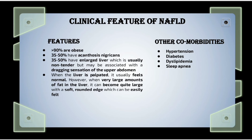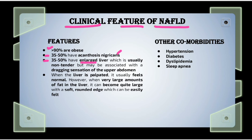Regarding clinical features of NAFLD: about 90% of NAFLD patients are obese. About 35 to 50% of NAFLD cases have acanthosis nigricans, a condition that causes areas of dark, thick, velvety skin in body folds and creases, usually seen in the armpits, groin, and neck region. About 35 to 50% have an enlarged liver, which is usually non-tender but sometimes associated with a dragging sensation in the upper abdomen.